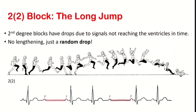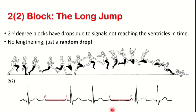Mobitz type 2 will be the Olympic long jump. In this case, the athlete runs and goes straight into the big jump. Similarly, there is no change in the PR interval, and the only abnormality will be a randomly missed QRS in no particular order.